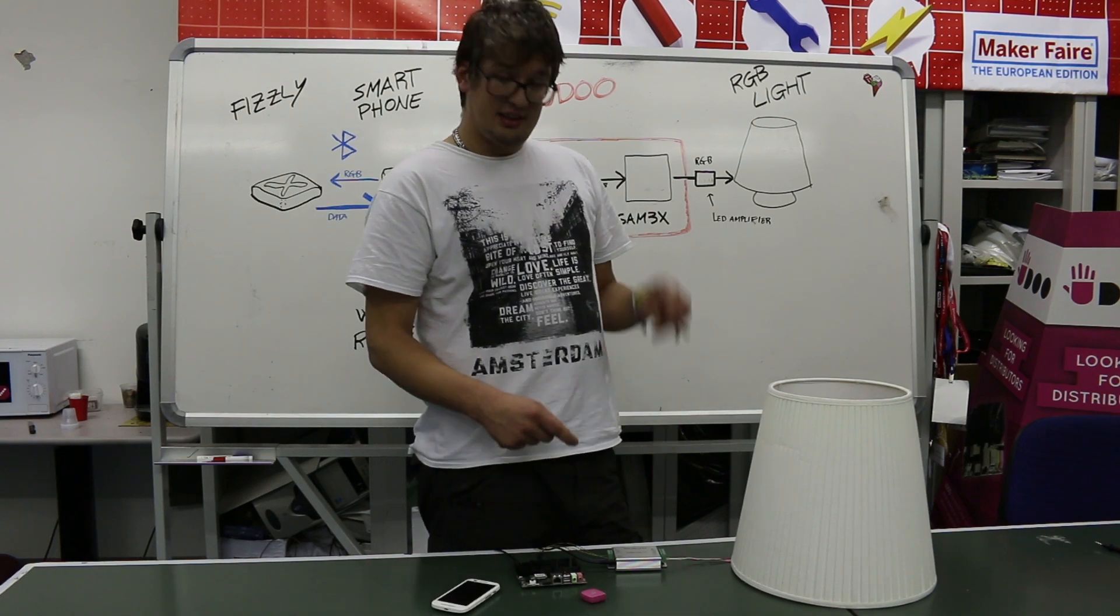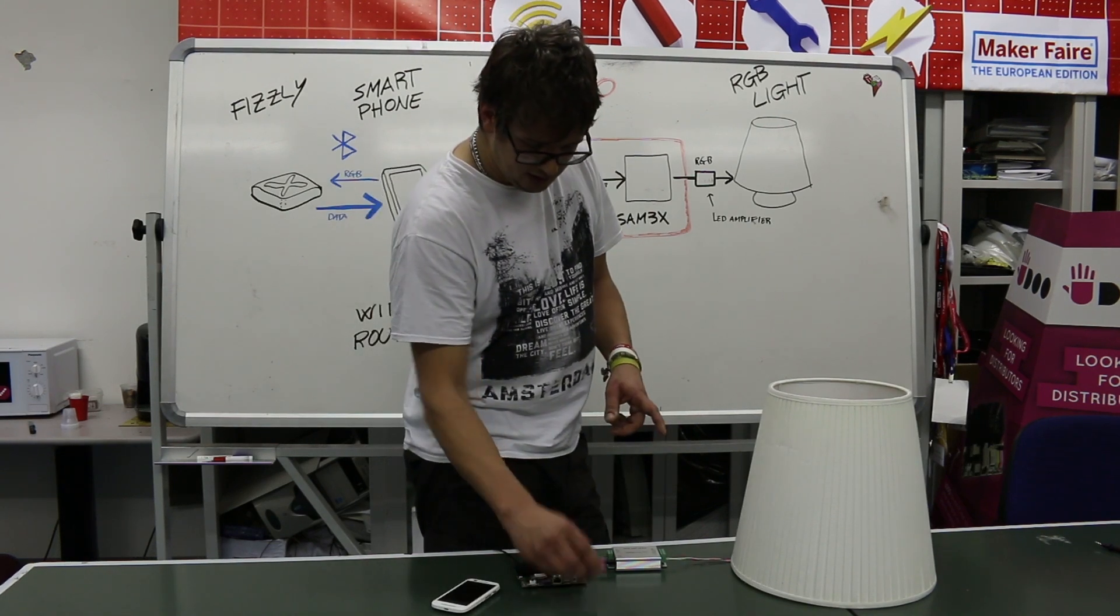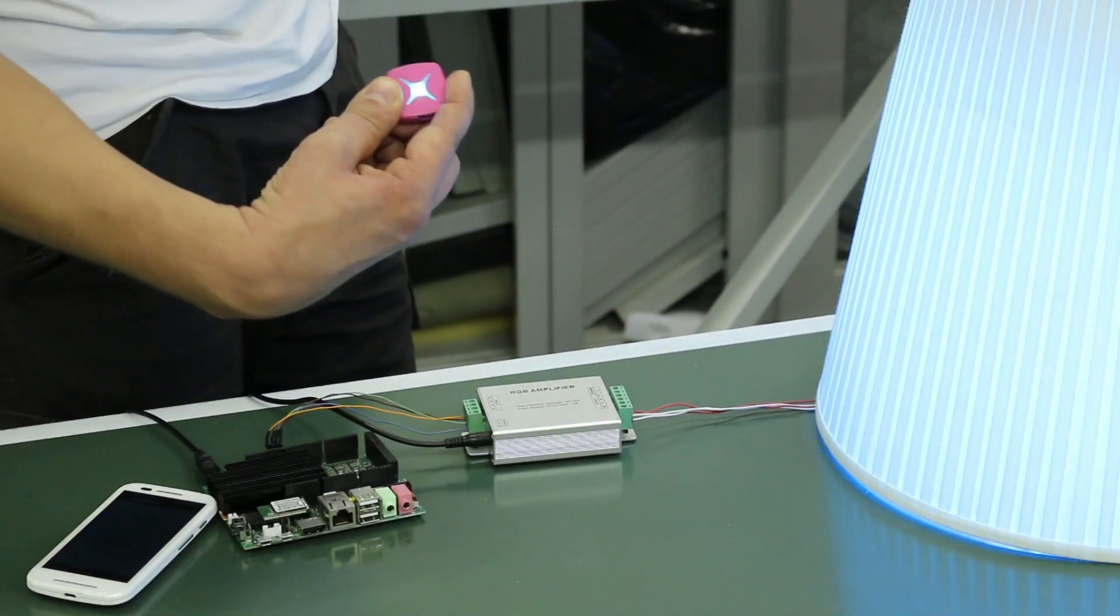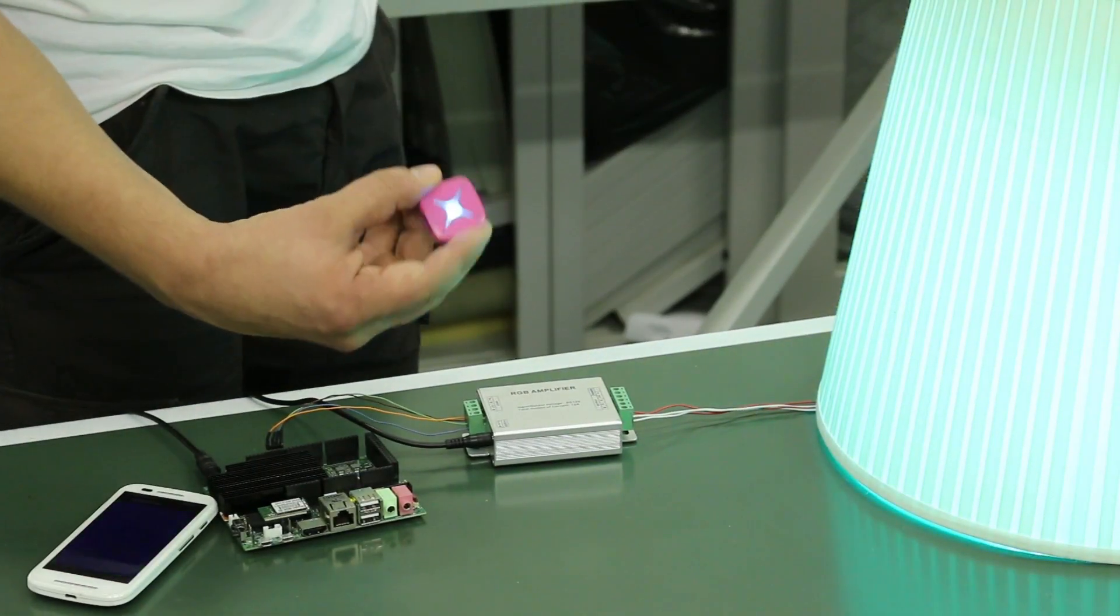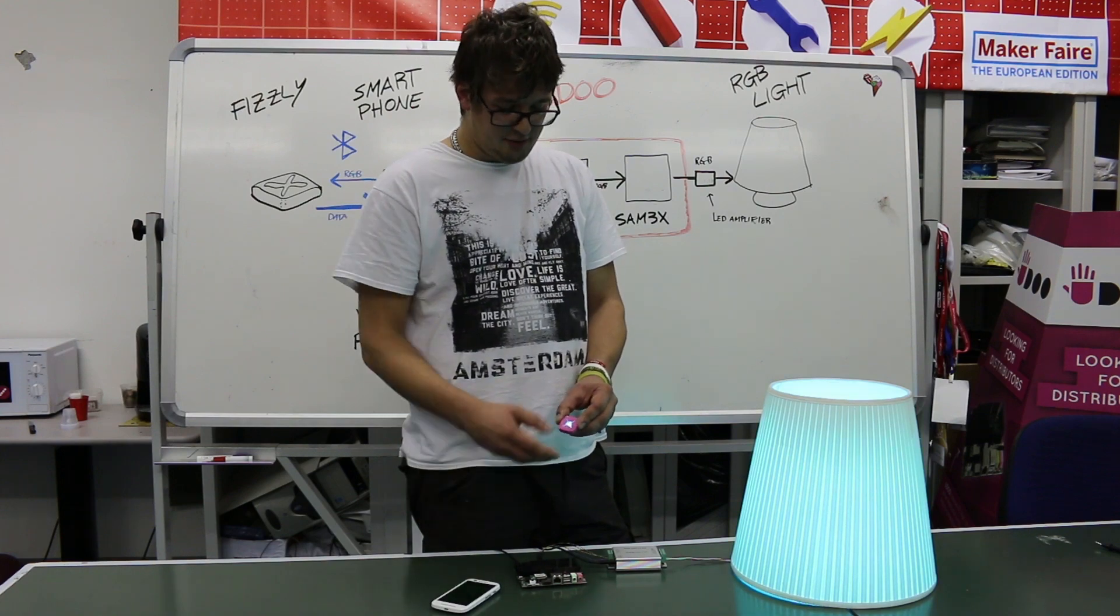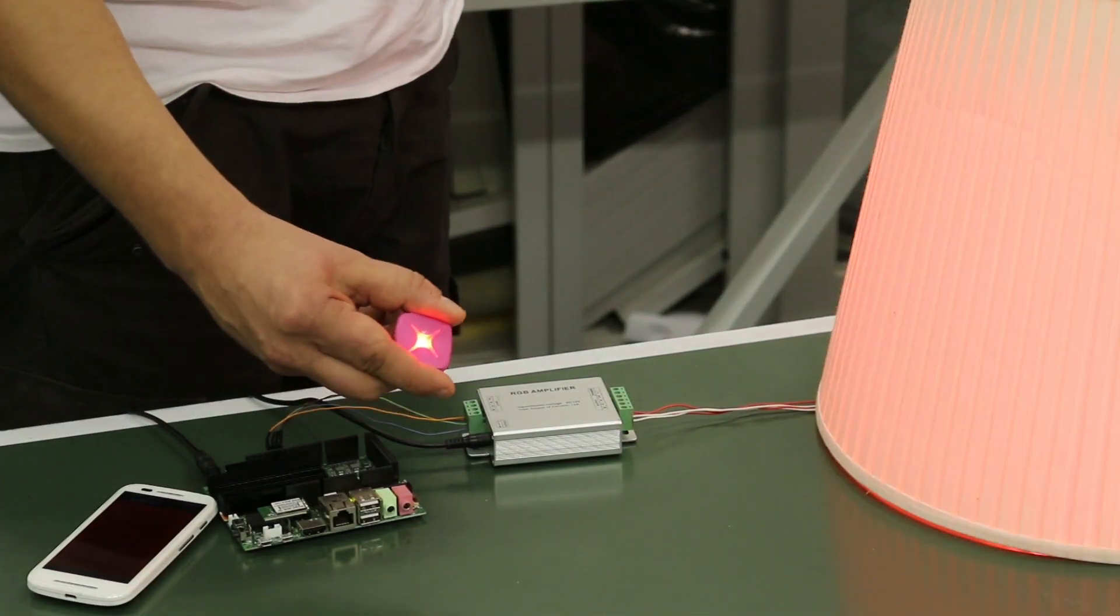Now the light is turned off. Shaking the Fizzly, it turns on, and rotating it left or right, it changes the color on my Fizzly, on my smartphone, and on the external light.